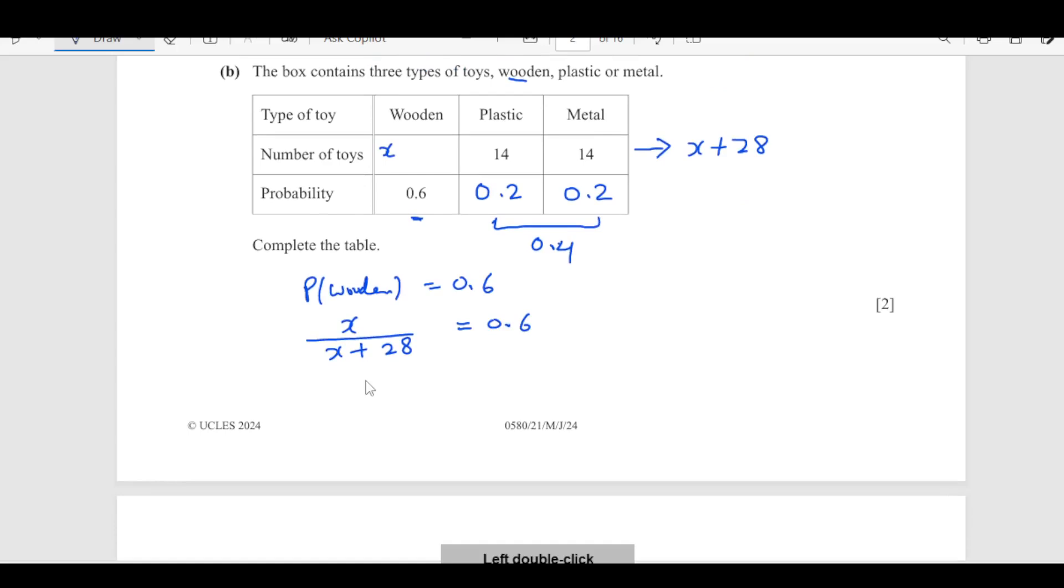As you cross multiply here, this is going to be x equals to x plus 28 times 0.6. So, from here, we will have this is 0.6x plus 16.8. Then we have x minus 0.6x equals to 16.8. Then 0.4x equals to 16.8 divided by 0.4. This comes out to be 42, so the value of x is 42.